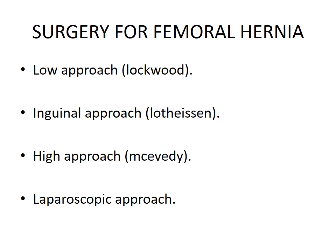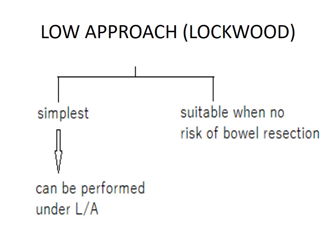Surgical approaches for femoral hernia: the low approach is Lockwood, the inguinal approach is Lotheissen, and the high approach is McEvedy. The Lockwood approach is the simplest, can be performed under local anesthesia, and is suitable when there is no risk of bowel resection.